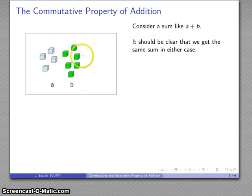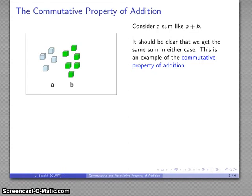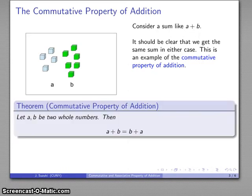Whether I started with a and added b to it, or whether I started with b and added a to it, I got the same sum. And so that tells me that there's something about addition, it doesn't matter which way I do it, and we talk about this as the commutative property of addition. So if I have two whole numbers, a and b,